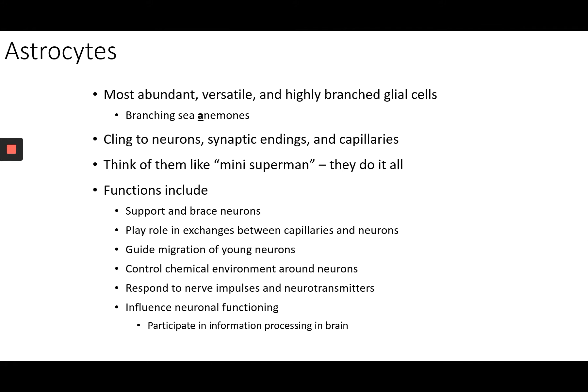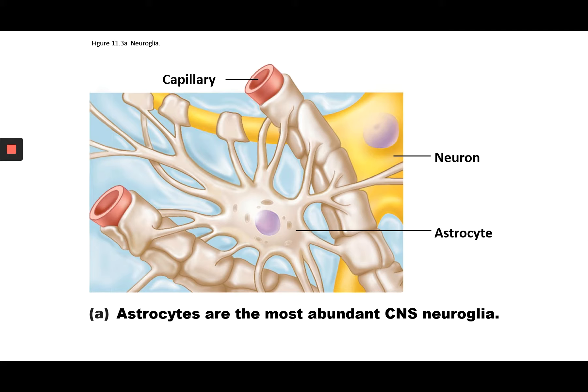Astrocytes are very abundant and have many functions — they're almost like the mini Superman of glial cells. One of their most common functions is supporting and bracing neurons, especially young neurons. They hold on to young neurons and nearby capillary beds, guide migration of young neurons toward nutrients, control the chemical environment around neurons, and even respond to neurotransmitters secreted from axon terminals. Here we can see an astrocyte — highly branched, with branches able to wrap around nearby neurons and vascular structures.